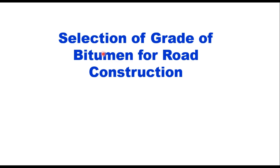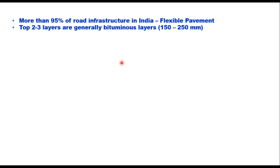Hello friends, today we shall discuss selection of grade of bitumen for road construction. More than 95 percent of road infrastructure in India is of flexible pavement type. In a flexible pavement, typically the top two to three bituminous layers have a thickness of 150 to 250 millimeters. These layers cost more than 70 percent of total pavement cost, as they require good quality aggregate, denser grading, and high quality binder.